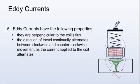Eddy currents have the following properties. They are perpendicular to the coil's flux and the direction of travel continually alternates between clockwise and counterclockwise movement as the current applied to the coil alternates.